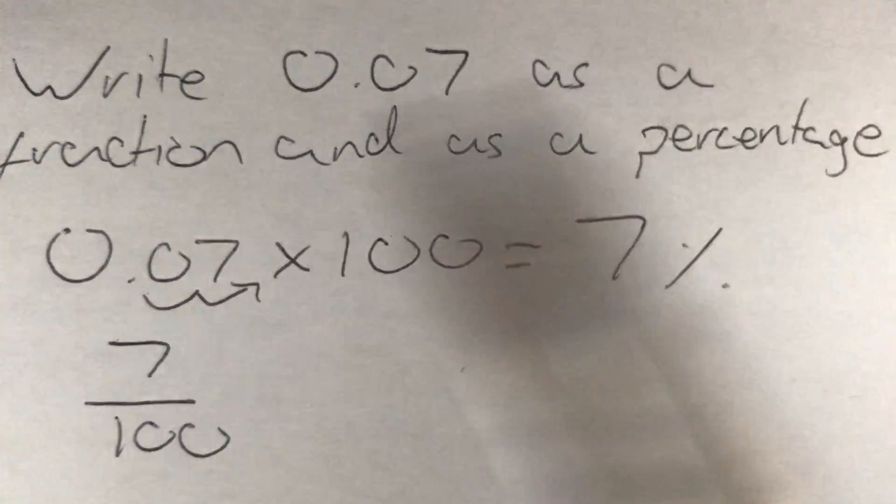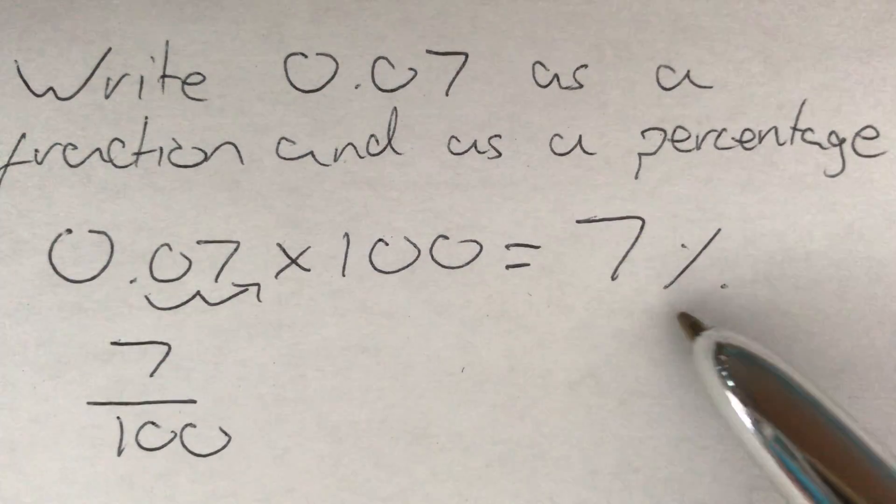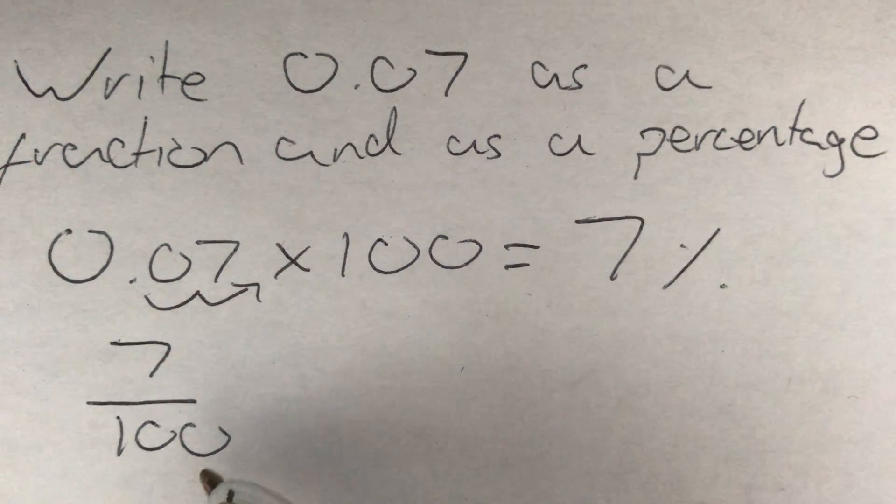So 0.07 as a fraction and percentage, we get 7%, and we get 7 over 100.